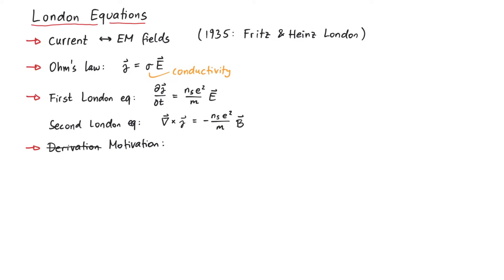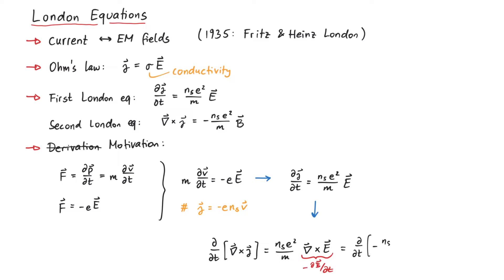First, we use classical mechanics. Since superconducting electrons move without any resistance through the material, we can imagine them as free particles under the influence of a uniform electric field which pushes the electrons in some direction. Considering Newton's second law as well as the Lorentz force, we can write the time derivative of M times V as equal to minus E times E. Since the current is defined as charge times number density times velocity, the first London equation follows from this. And by taking the curl of this equation, as well as one of Maxwell's equations, we get the second London equation.